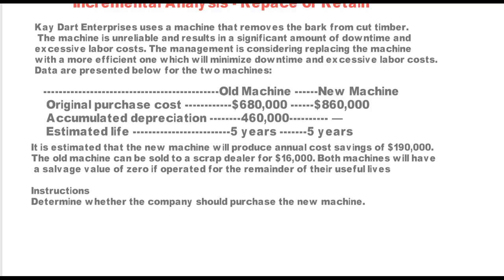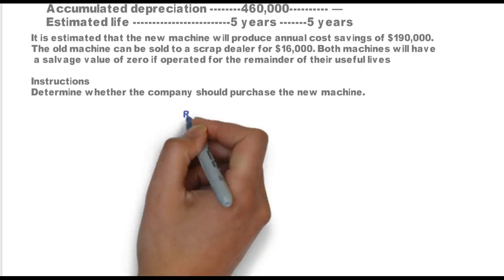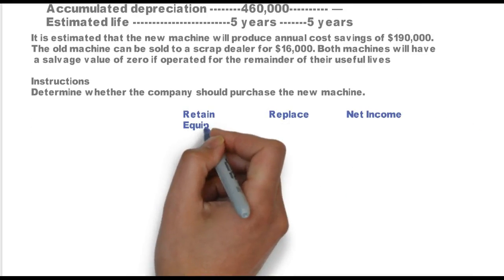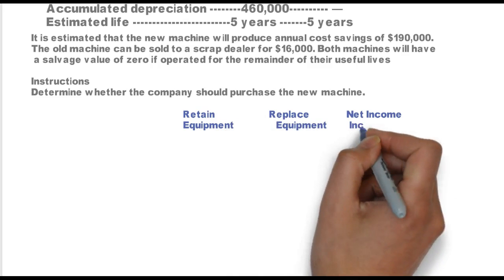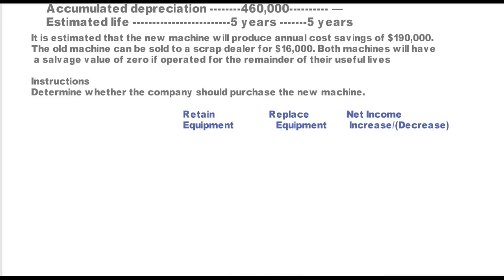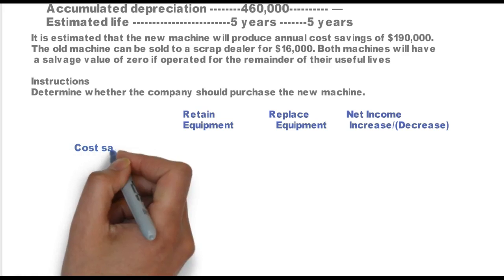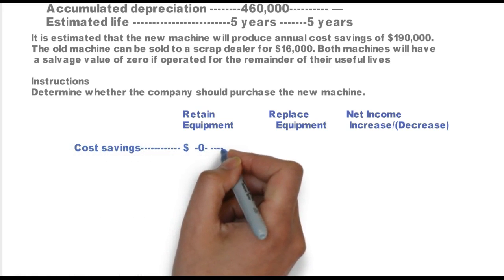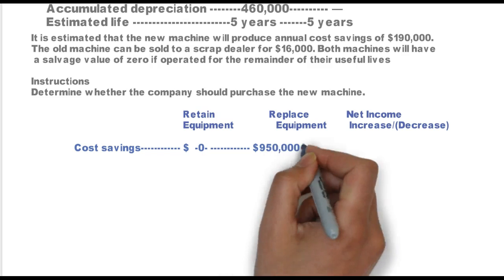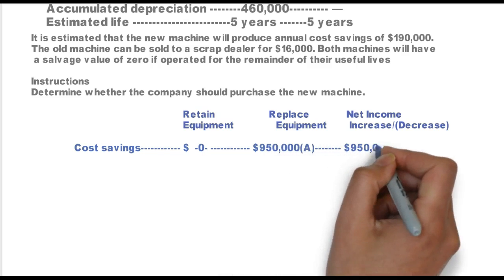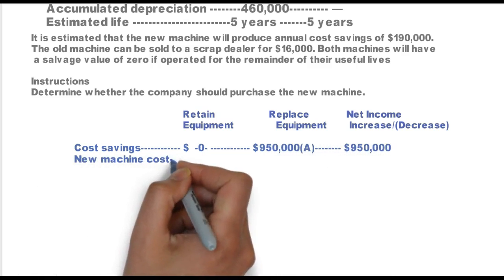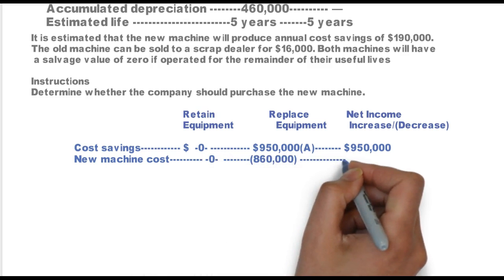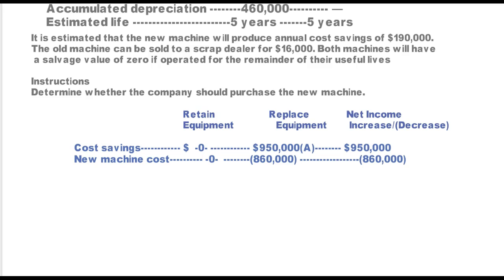Determine whether the company should purchase the new machine. The alternatives here are to retain the machine or replace the machine, and we're going to analyze the incremental difference in net income. Cost savings is the main thing. If I retain, I will not get any more cost savings. But if I replace, I will get $950,000 in cost savings — a net increase of $950,000.